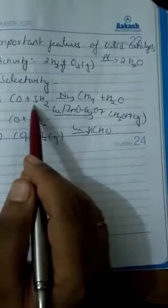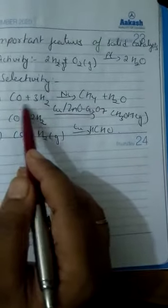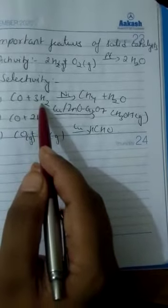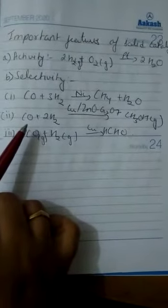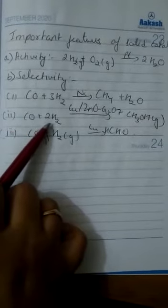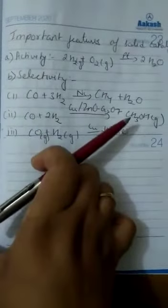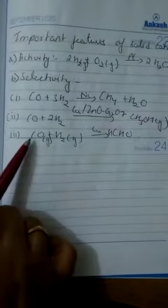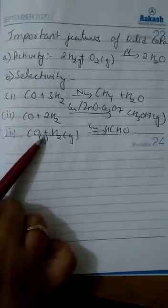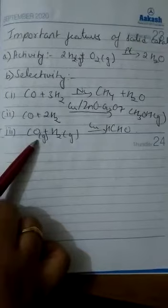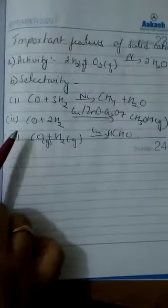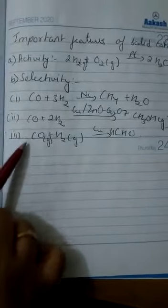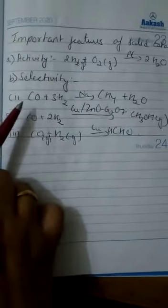In the first case, carbon monoxide reacting with hydrogen forms methane and water. In the second reaction, carbon monoxide reacted with hydrogen forms methanol. In the third reaction, carbon monoxide reacted with hydrogen forms methanal. So the reactants are same but the products are different.